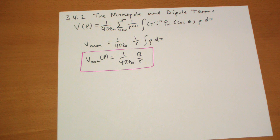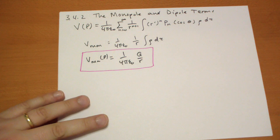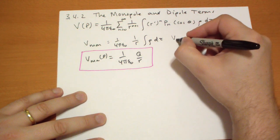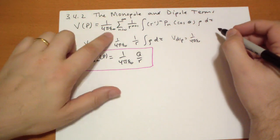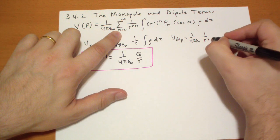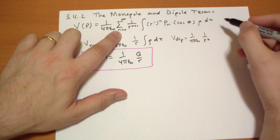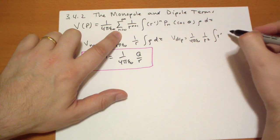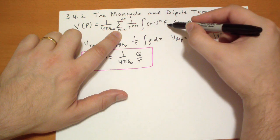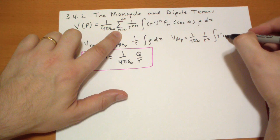The dipole term, there's not much more to say on the monopole term. The dipole term looks like this. 1 over 4 pi epsilon naught. And this is when n equals 1. So we have 1 over r squared. And it's going to be the integral of r prime. The first Legendre is cosine, cosine of theta. Rho d tau.